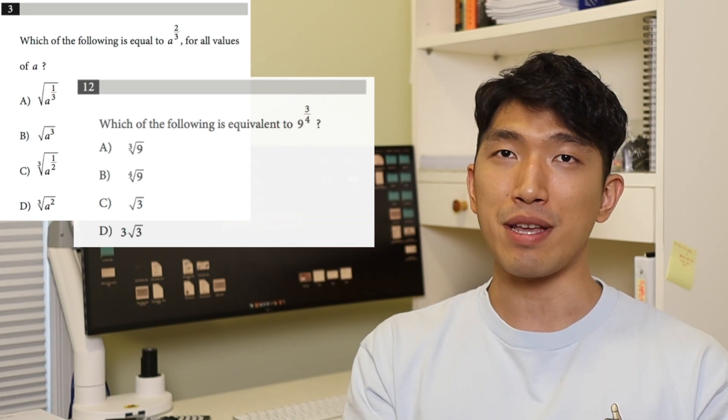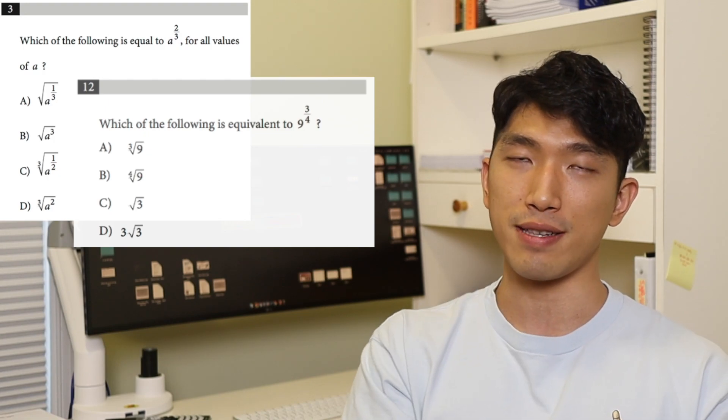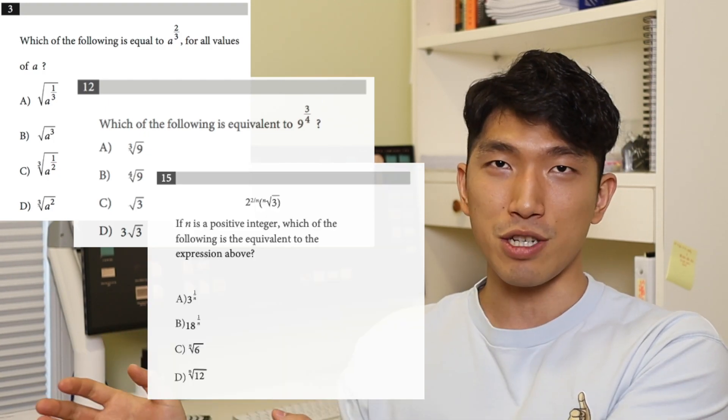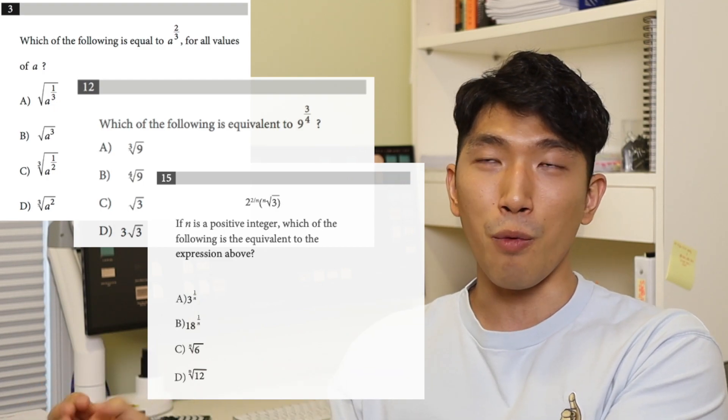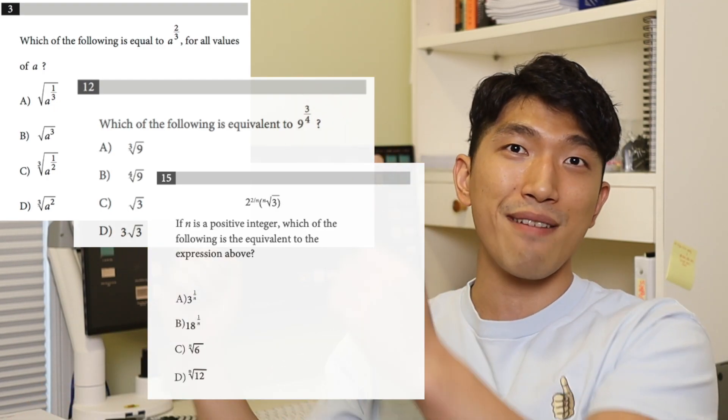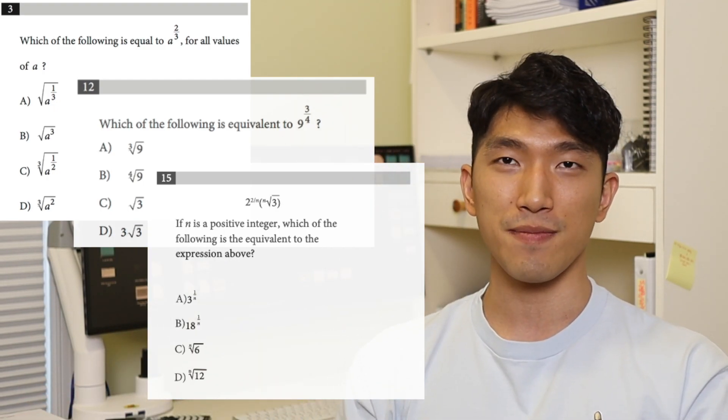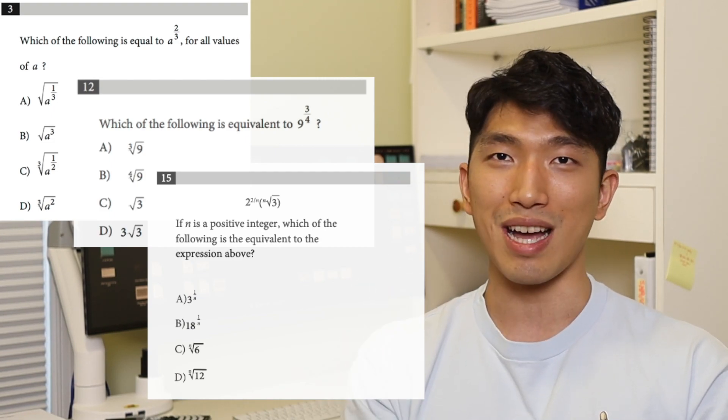But something interesting has happened on the past October 2020 exam. Long story short, there was like a difficulty six question, a difficulty seven question, when in the past difficulty five was the hardest question out there. This question was twisted up like eight, nine, ten, eleven times.